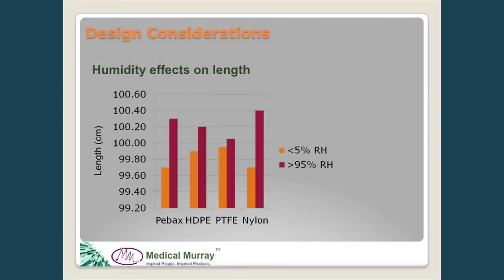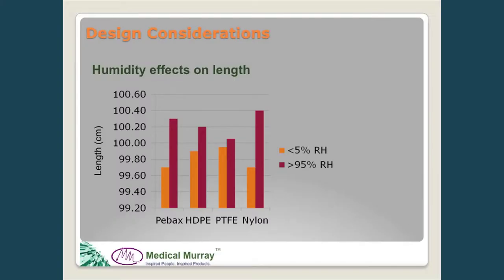A third consideration that can sometimes be overlooked is the effects of moisture absorption in plastics, or the effects of humidity on length. This is critical for devices where we need to advance one component from the tip a specified length. If components are made of dissimilar materials, depending on the environment they're stored in, we can have a different result after a set period of exposure to a more or less humid environment.